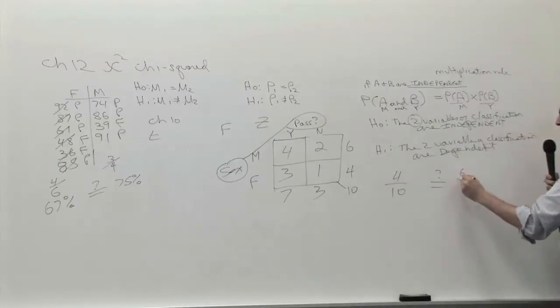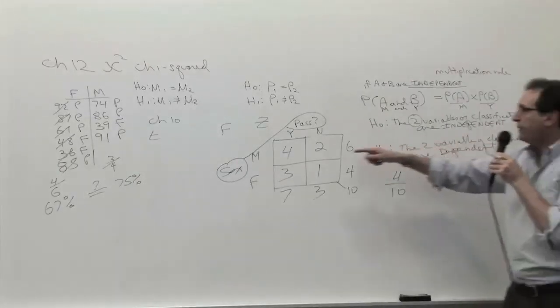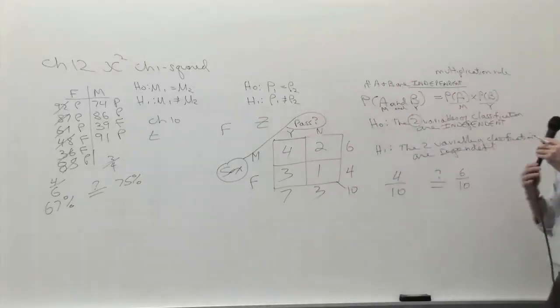And how many people passed? Well, if you pick someone, there are seven people passing, so the chance is seven out of ten you're going to pick somebody who passed randomly.